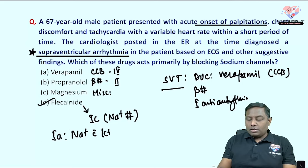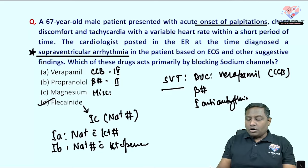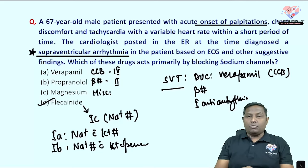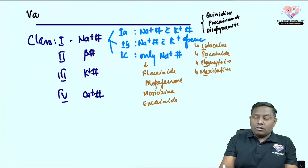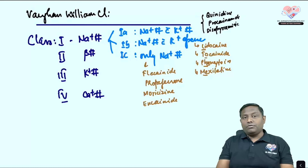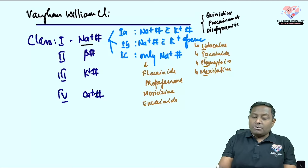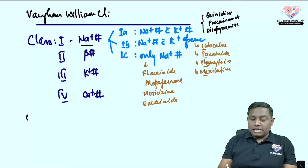In the Vaughan Williams classification: class 1A blocks sodium and potassium channels; class 1B blocks sodium channels and opens potassium channels; class 1C is a pure sodium channel blocker. Class 2 is beta blockers, class 3 is potassium channel blockers, and class 4 is calcium channel blockers.